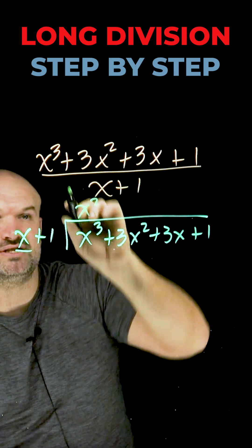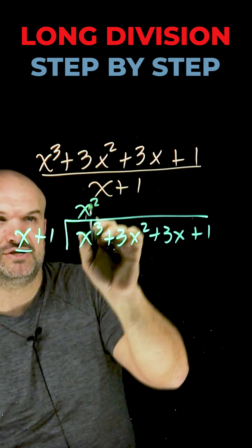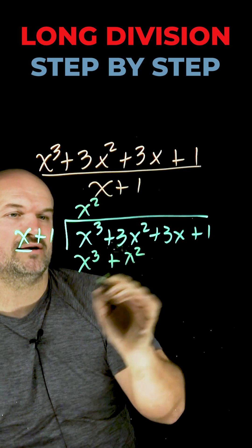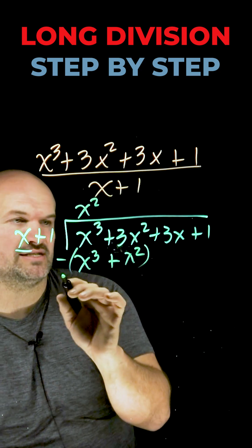Now I'm going to take the first term of my quotient and multiply it by both terms of my divisor. x squared times x is x cubed. x squared times 1 is going to be a positive x squared.